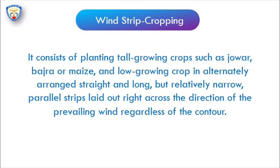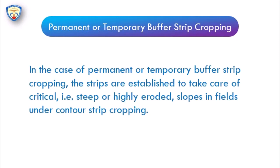Permanent or temporary buffer strip cropping is recommended when there is a critical condition such as steep or highly eroded soil slopes in fields under contour strip cropping. When there is a serious critical stage of erosion or a steep, highly eroded area, this type of strip cropping is recommended by scientists and followed by farmers.